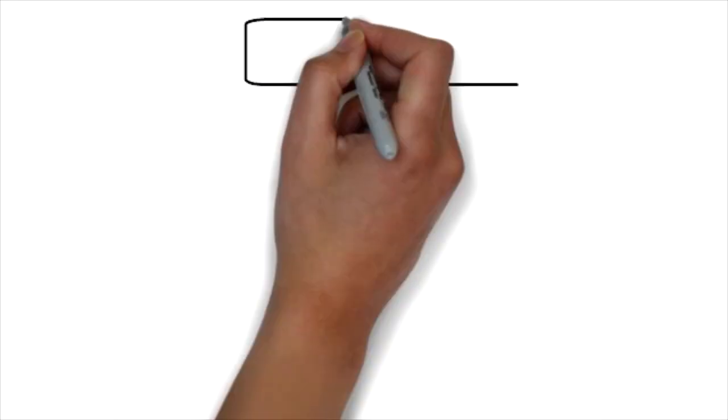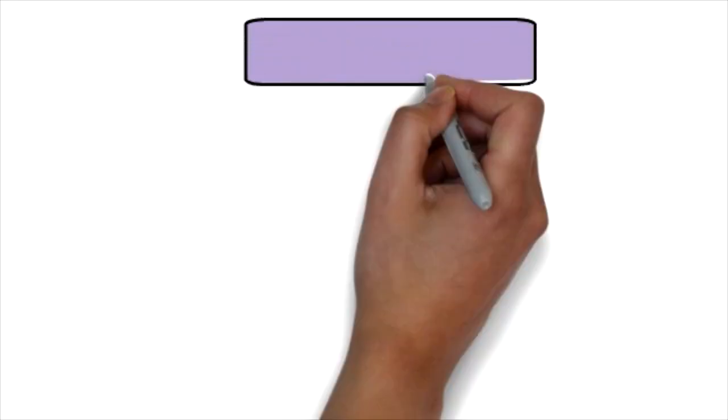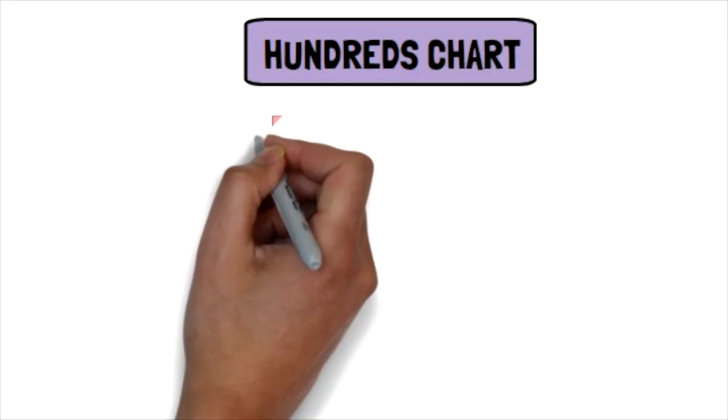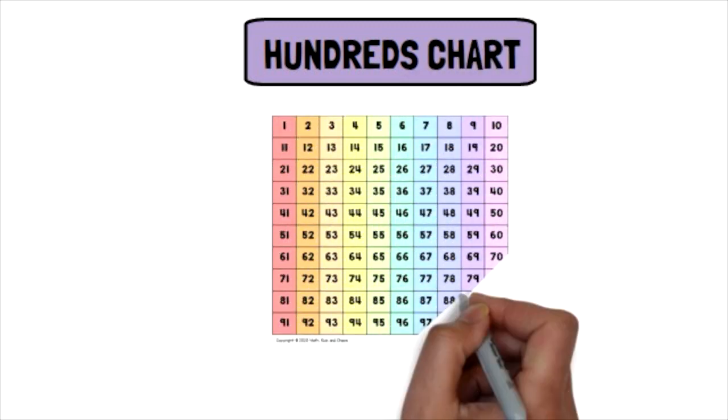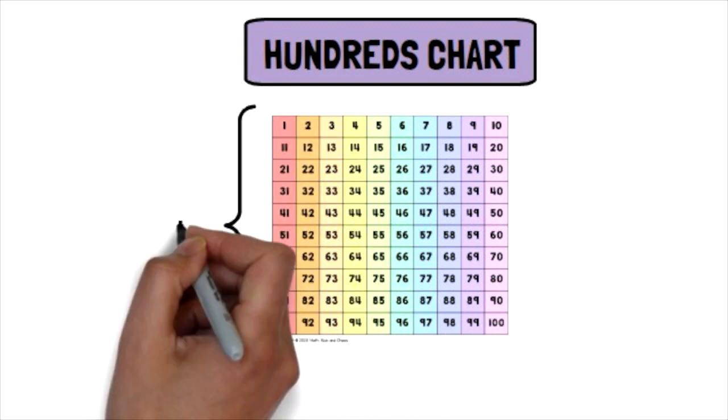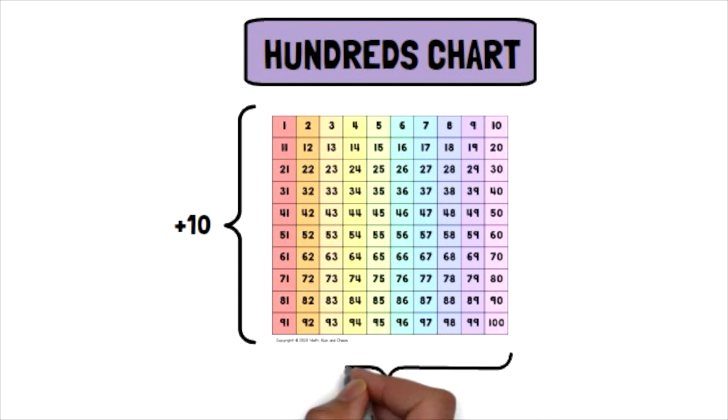This next strategy is using a hundreds chart to solve double-digit equations. This one I used a lot when I taught first grade. It was a very good visual representation of numbers for my students. And once they understood that as you go down the chart you add 10, and when you go across you add 1, a lot of them really gravitated towards using this strategy when we were doing double-digit equations.